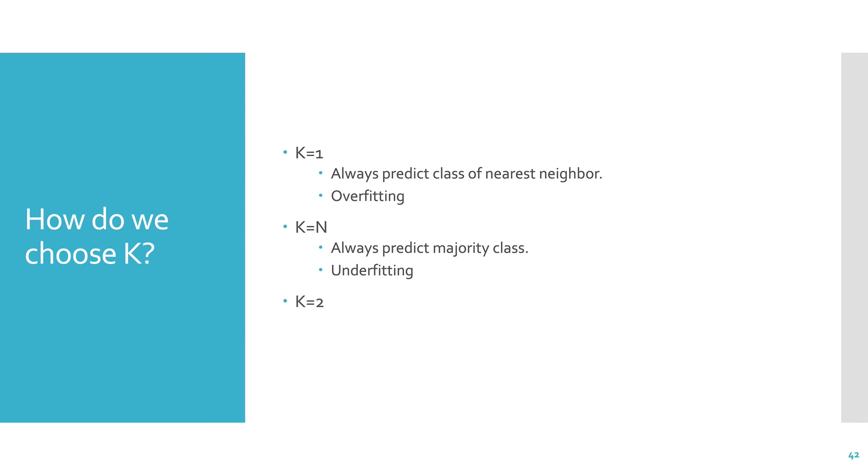If k equals 2, we can run into issues when we have a point that's equidistant from a positive and a negative sample. So if we had an unknown point right here, it would be equally far away from a female point and equally far away from a male point. And so how would we make our prediction? How would you do any kind of tie-breaking? So when you have an even k, you're putting yourself in a position to have to do tie-breaking randomly. And that's not a good position to be in.